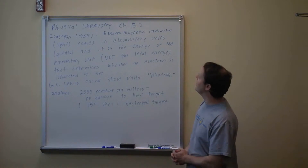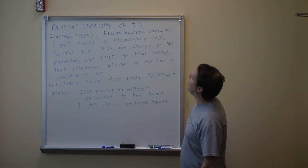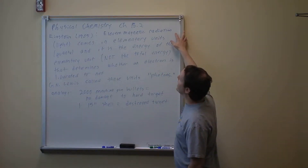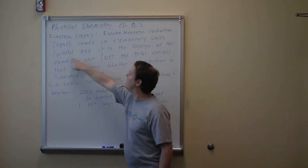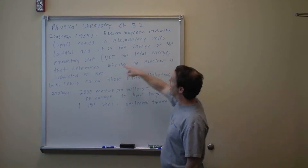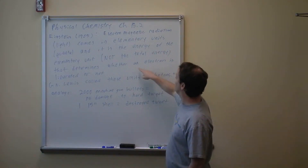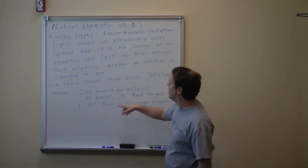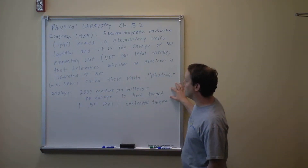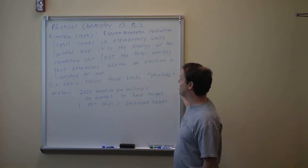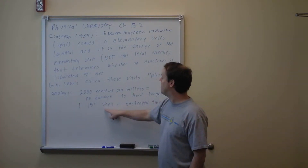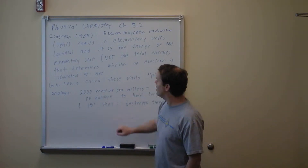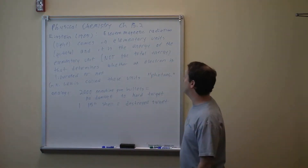Continuing on Physical Chemistry, Chapter 18, Section 2. In 1905, Einstein said electromagnetic radiation comes in elementary units or quanta, and it's the energy of the elementary unit — not the total energy — that determines whether an electron is liberated. G.N. Lewis called these units photons. By analogy: you can shoot a hard bunker all day with machine gun bullets and cause no damage, but one big 15-inch shell destroys it. The point is, even if the total energy is the same, it only counts when it's all concentrated at once — not spread out.